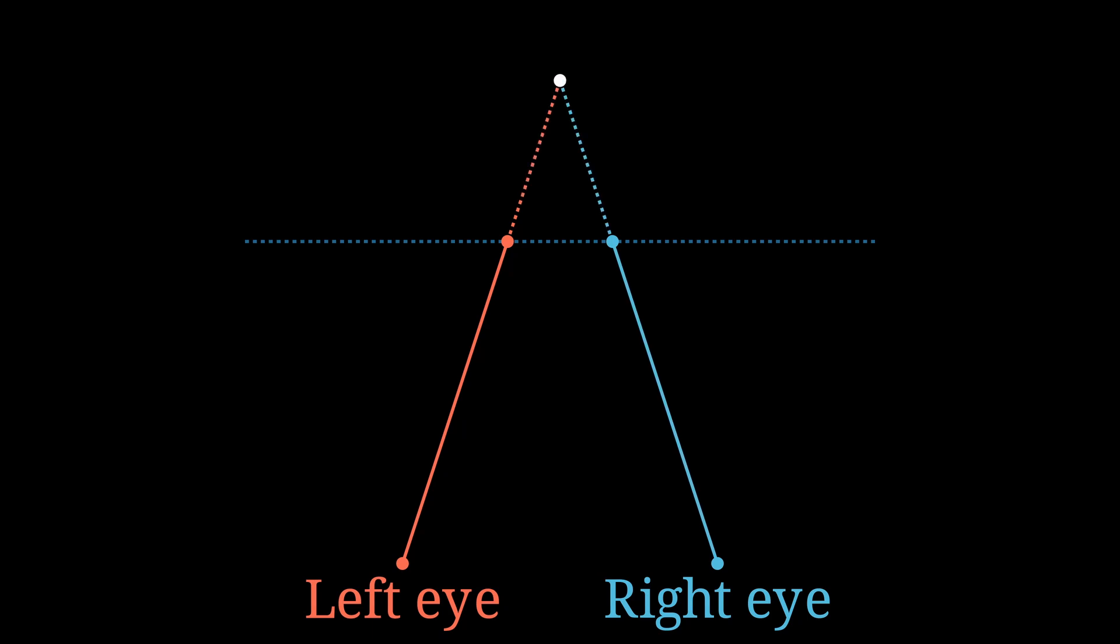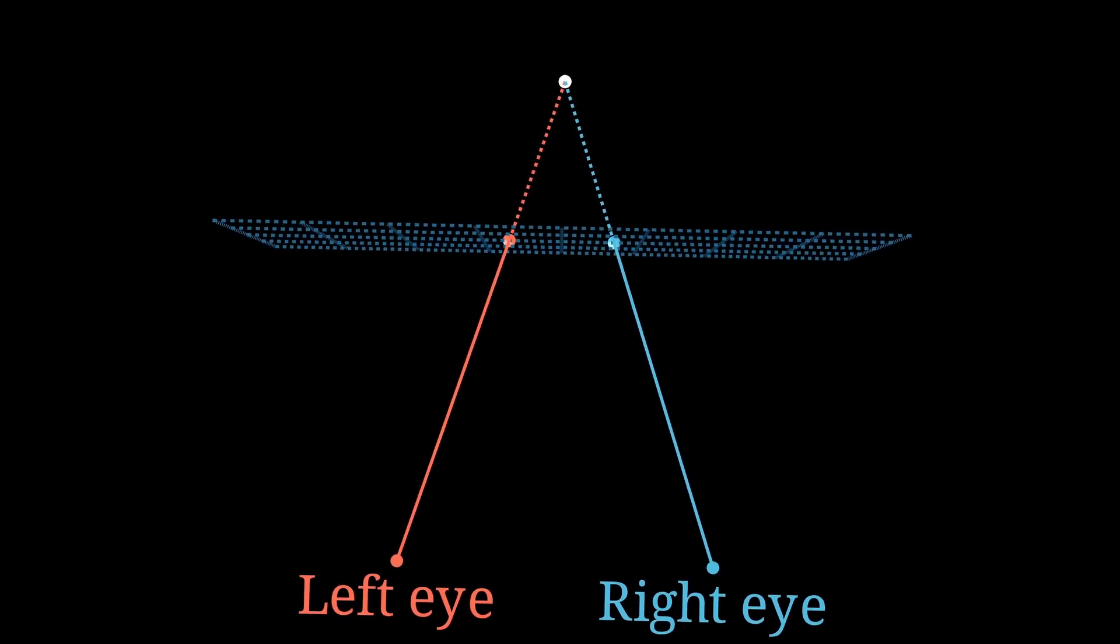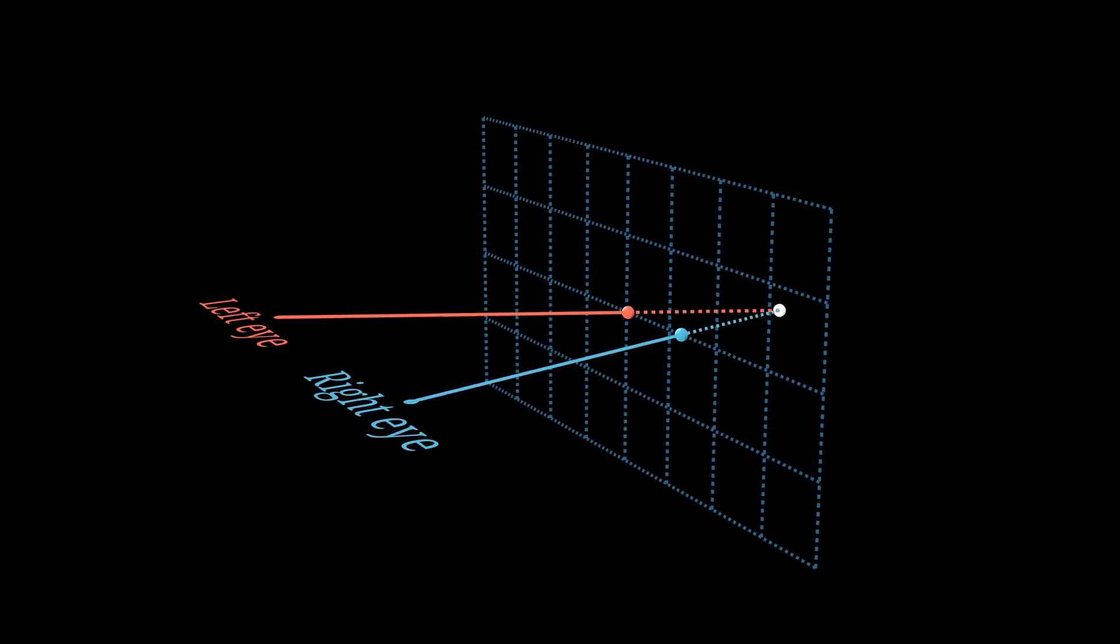This is also roughly how 3D movies and 3D glasses work, although the geometry is slightly different there because both images are actually in the same place, and we use light filters to make sure that each eye only sees one of them. And obviously that's not how you generate images for 3D glasses, you just take two photos, one for each eye, and then overlay them. But this is why that works, in terms that also apply to stereograms. I'm going to be glossing over the vertical direction in this video because it isn't terribly interesting or relevant.